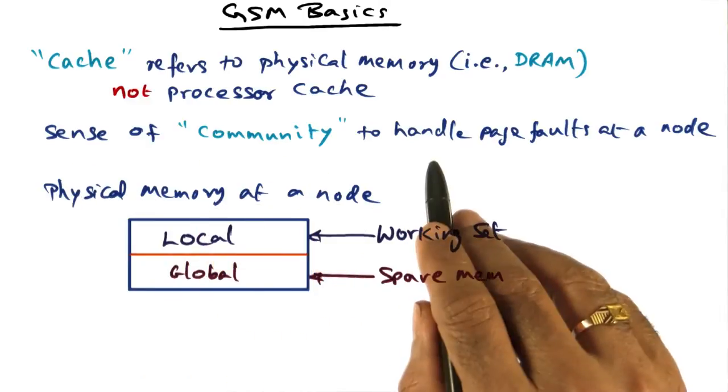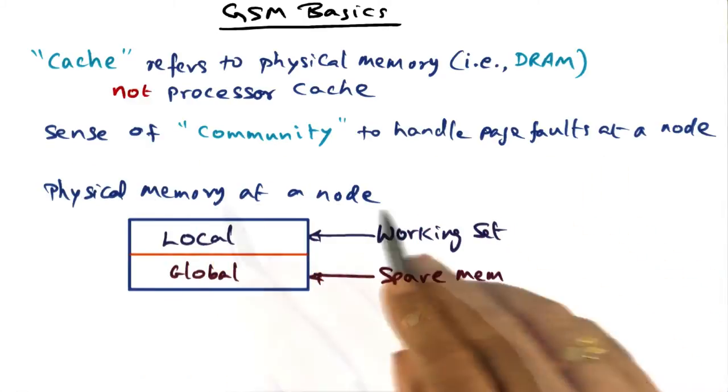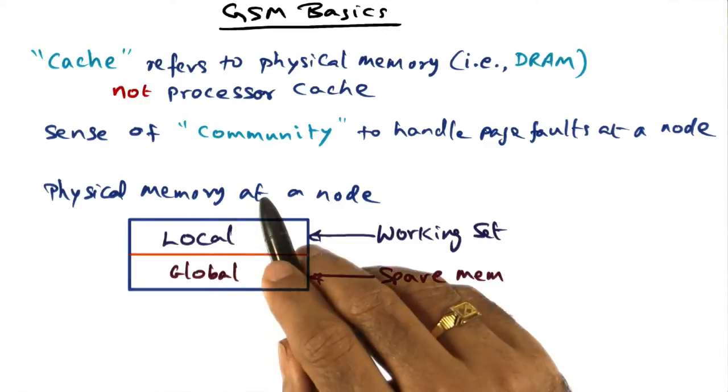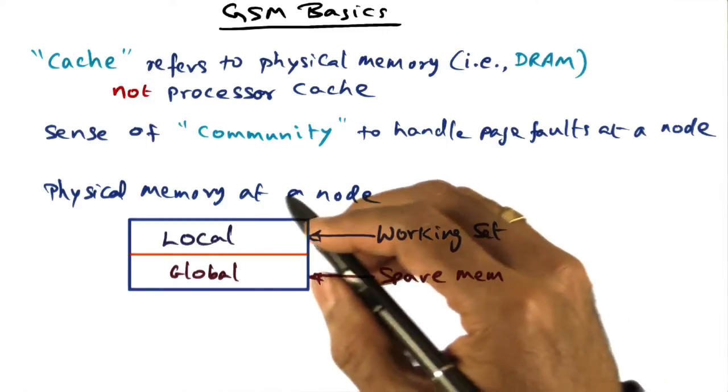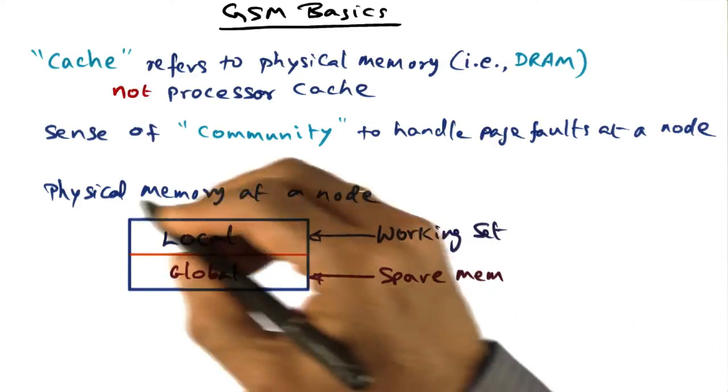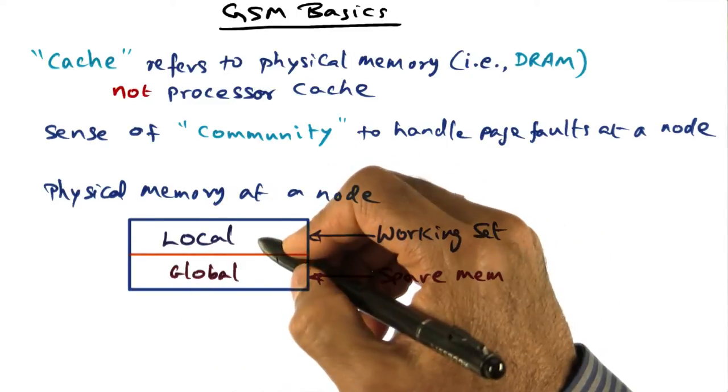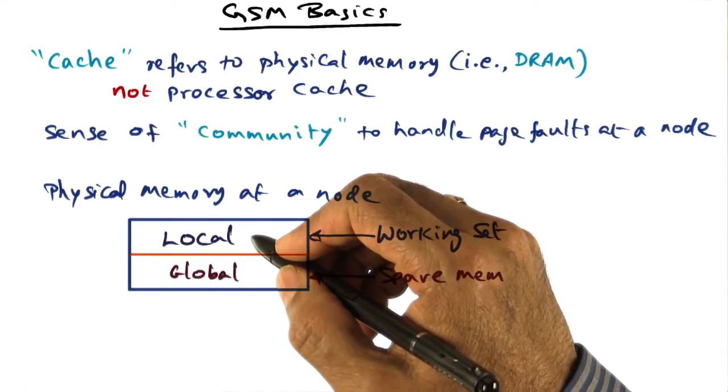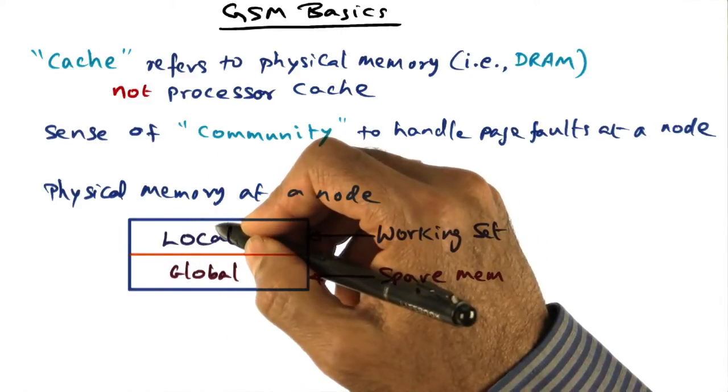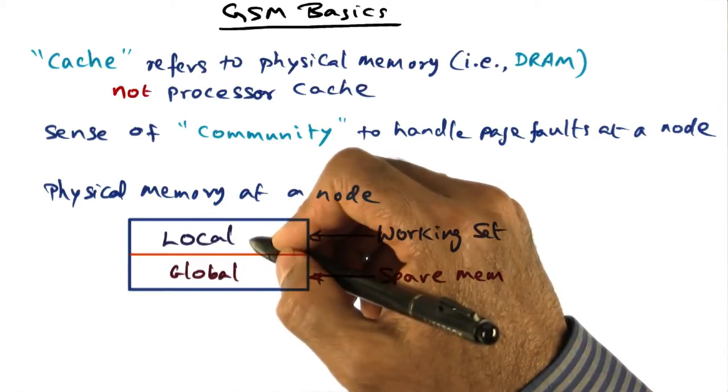And there is a sense of community to handle page faults in a particular node. I mentioned that we're going to use peer memories as a supplement for the disk. In other words, we can imagine the physical memory at every node to be split into two parts. One part is what we'll call local, and local contains the working set of the currently executing processes at this node. So this is the stuff that this node needs in order to keep all the processes running on this node happy.